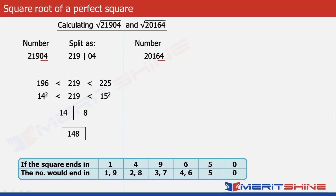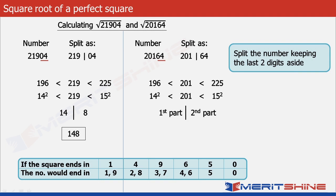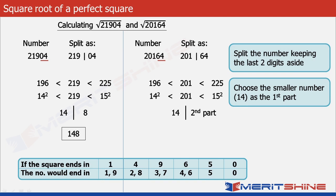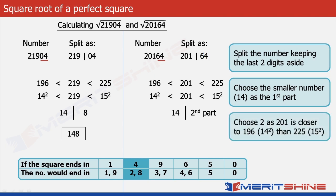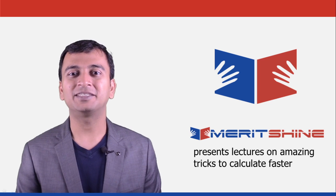Now let's take 20164. Here again we will split the number keeping the last two digits aside. So we will get 201 in the first part and 64 in the second. We observe that 201 is also in between 196 which is 14 squared and 225 which is 15 squared. The first part will get the number whose square is smaller, which in our case is 14. For the second part, our choice could be 2 or 8. In this case 201 is closer to 196, so we will get 2 in the second part. Finally clubbing these two, we will get our final answer as 142. I will again emphasize that this trick can be used only when the given number is known to be a perfect square.